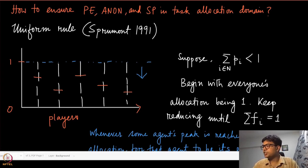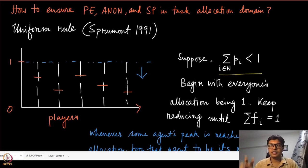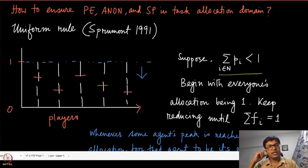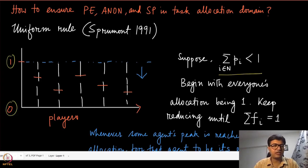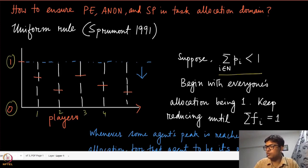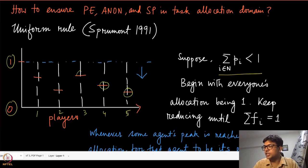Without loss of generality, assume that the sum of these peaks is less than one, which means the sum of the most favorite allocations does not allocate the job completely. Therefore some agents have to be overloaded. In this figure, the y-axis shows the share of the task, and the x-axis shows different players — player one through five. The red horizontal lines show the peaks for each of these agents.